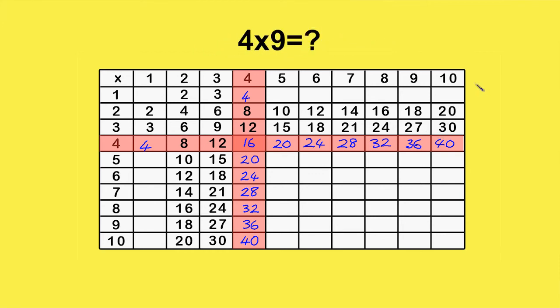Now, let's say you want to look up what 4 times 9 is. You go down the fourth column until you reach the ninth row and read off the answer: 36.